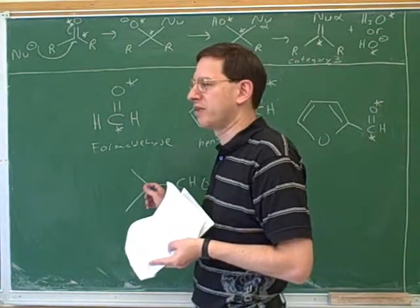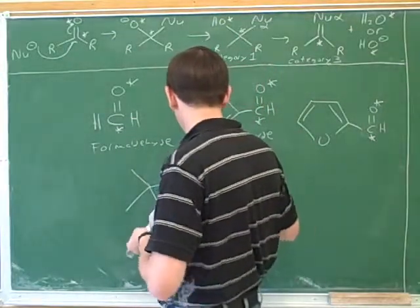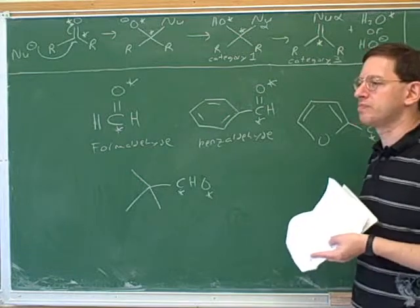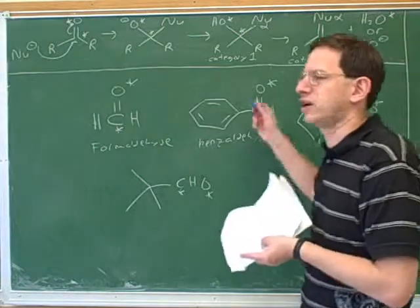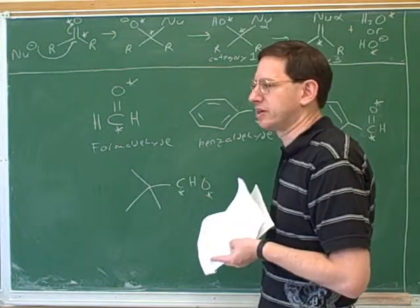Just one more example of an alpha carbon with no alpha hydrogens. So again, it'll have to be electrophilic. All of these are good examples of molecules to use in a crossed aldol condensation because they can't be nucleophiles. So you know they're going to be electrophiles.